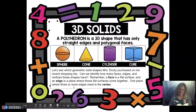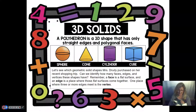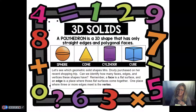We're going to be taking a look at some spheres, cones, cylinders, cubes, and rectangular prisms. We'll also be taking a look at the defining attributes of those — the number of faces each of these items have, the number of edges, and the number of vertices. Remember, one we call a vertex; more than one we call vertices. A face is a flat surface of a geometric solid. An edge is a place where those flat surfaces meet. The place where three or more of those edges meet is the vertex.